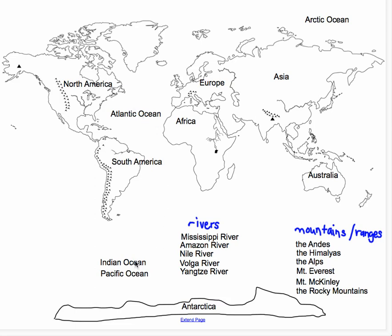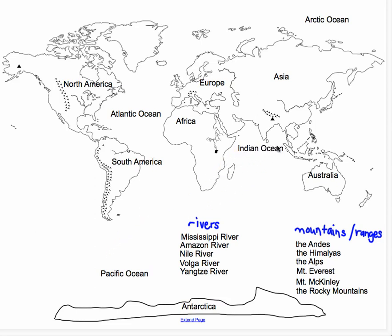The Indian Ocean is going to go between Africa and Australia. A good clue is to look for the country of India, which is right here, and that's where the Indian Ocean goes.